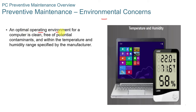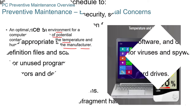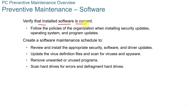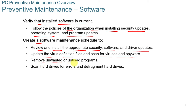An optimal operating environment for a computer is clean, free of contaminants, and within the temperature and humidity range specified by the manufacturer — you can check the manufacturer's website for those specifications. Make sure installed software is current and up-to-date patches are applied. Follow organizational policies for security updates, OS updates, and program updates. Create a software maintenance schedule to check and install security software and driver updates, update virus definition files, scan for viruses and spyware, and remove unwanted or unused programs — including potentially unlicensed software. Scan hard drives for errors and defragment older spin drives, but not SSDs.